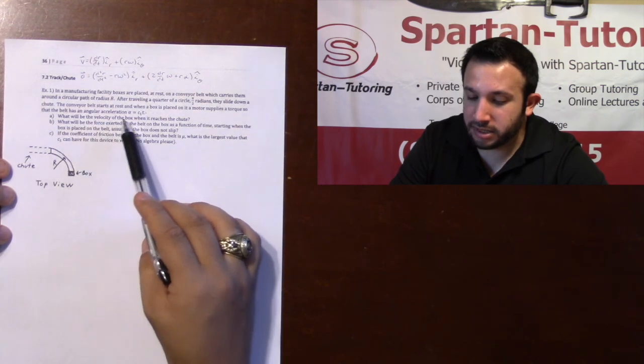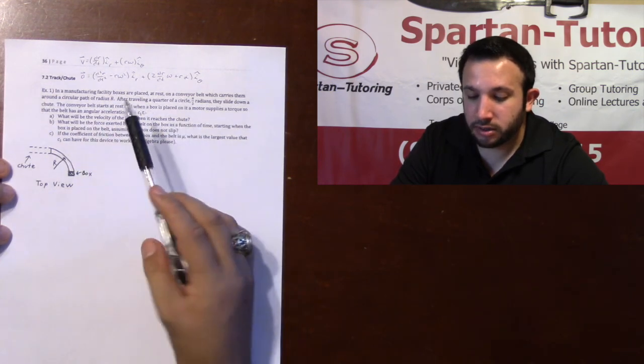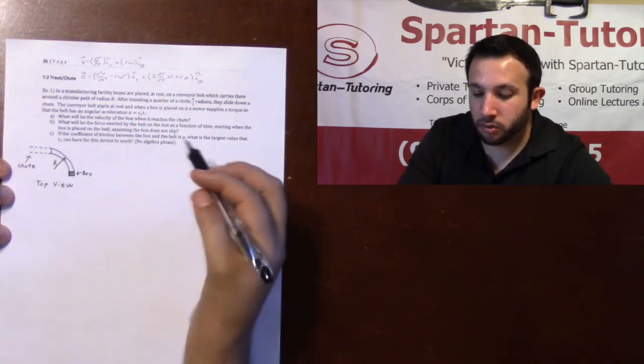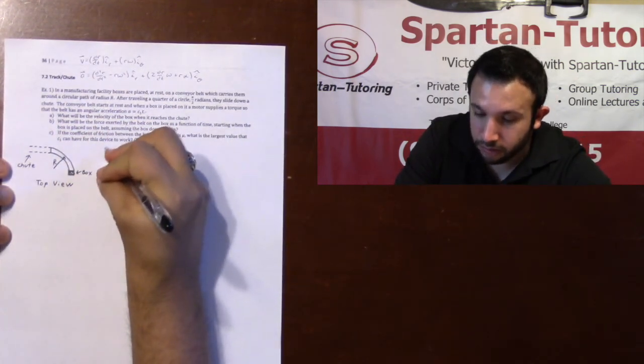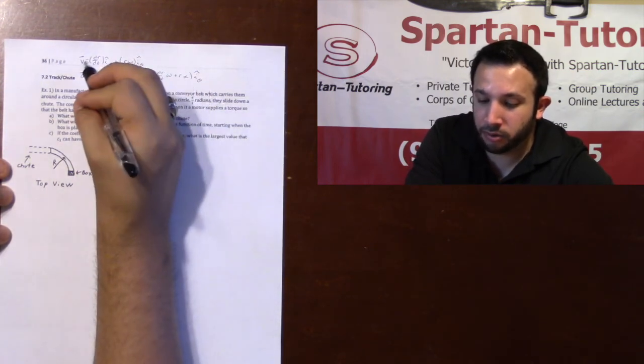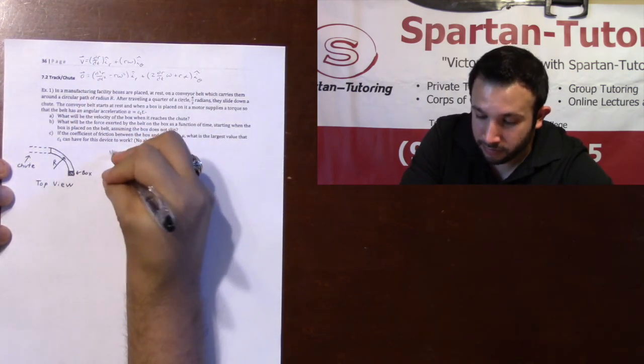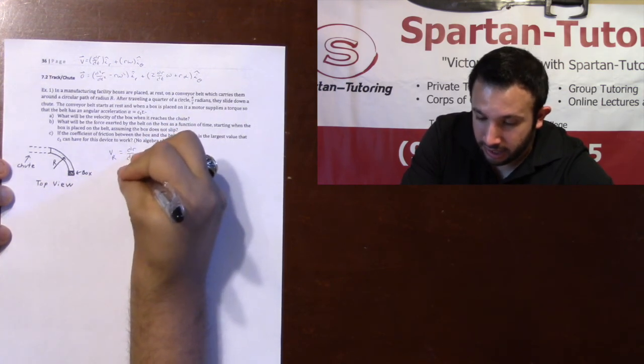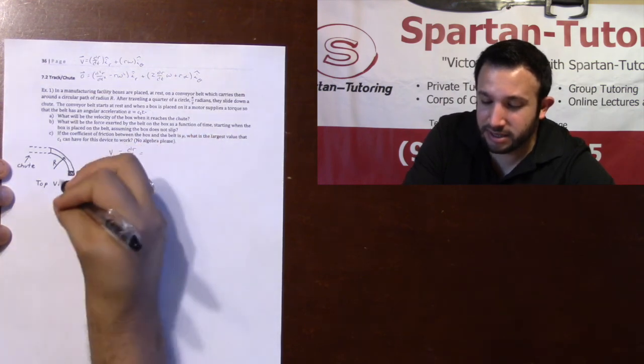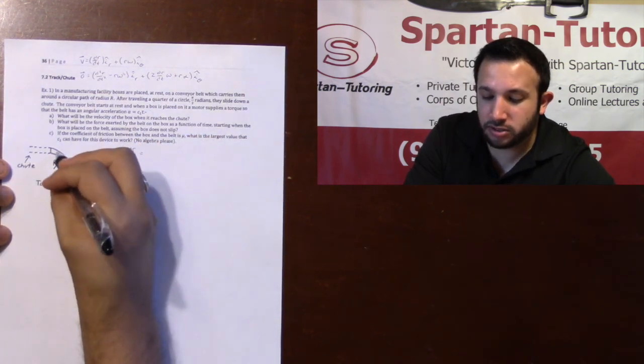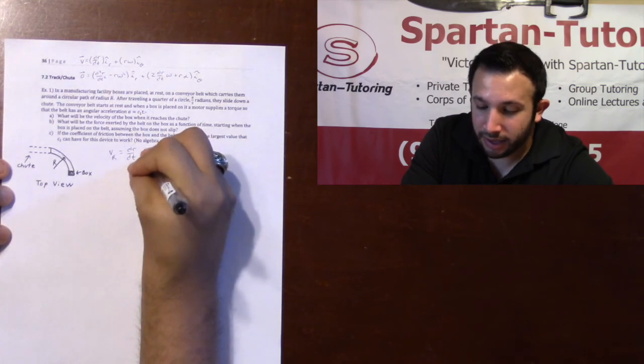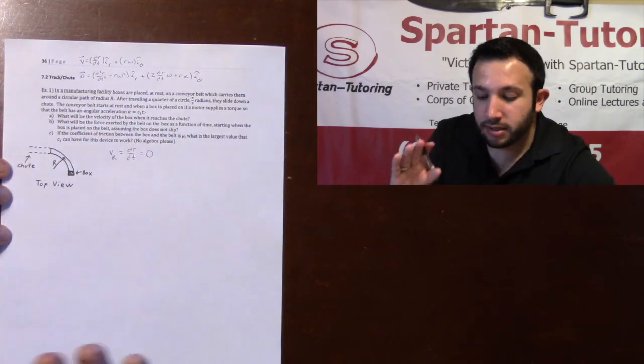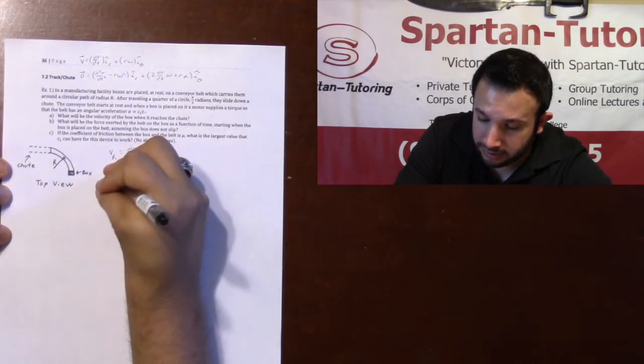In part a, what will be the velocity of the box when it reaches the chute? We derived in the previous video my total velocity. Now we're going to find vr and vθ, the r and theta components of my velocity. vr equals dr dt. The radius of my circular motion is not changing with respect to time, so that's zero.